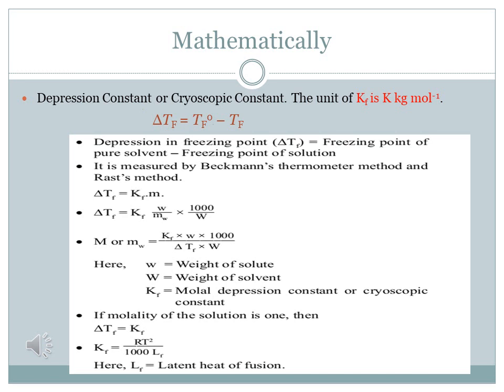Like in the elevation in boiling point slide where ΔT_B is directly proportional to molality, here ΔT_F is also directly proportional to molality. Removing the proportionality sign: ΔT_F = K_F × m, where K_F is the depression constant, also known as the cryoscopic constant. The unit of K_F is K·kg per mol.